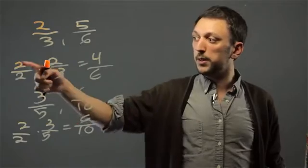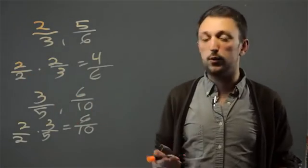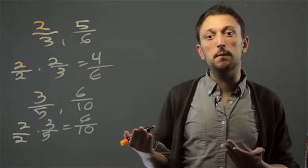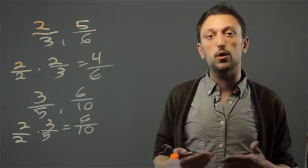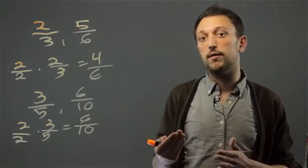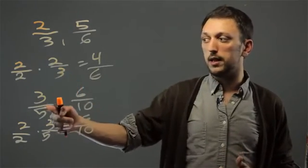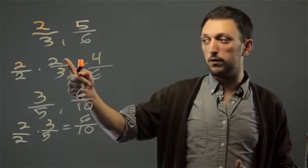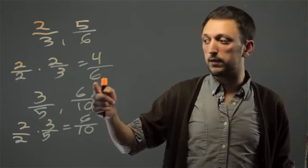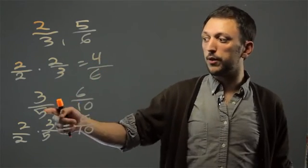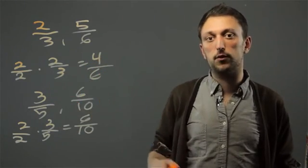We're multiplying by 2 over 2, because 2 over 2 is just 1. And when you multiply by 1, you don't actually change the value, you're just changing the expression. So 2 thirds is 4 sixths, and 3 fifths is 6 tenths — they are equivalent.